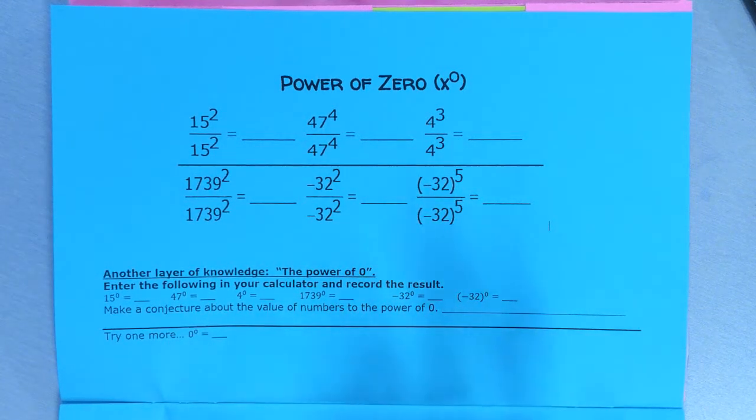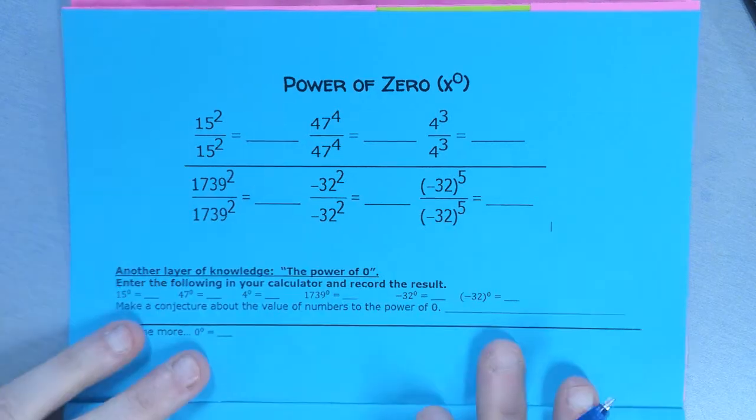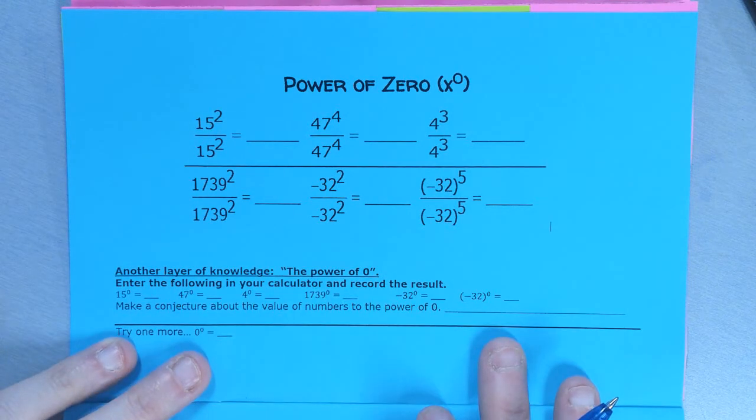Today we're going to learn our next two exponent rules: power of zero and negative exponents. Yesterday we learned about the product of powers rule, which is where we multiply two exponents with the same base. We multiply the coefficient, keep the base, add the power.